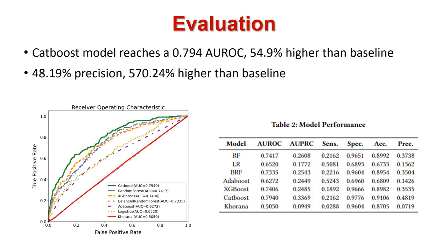We conducted evaluation on the dataset we collected. The CatBoost model reaches 0.794 AUROC, which is 54.9% higher than the baseline Khorana model. The precision is 48.19%, also substantially higher than the baseline.